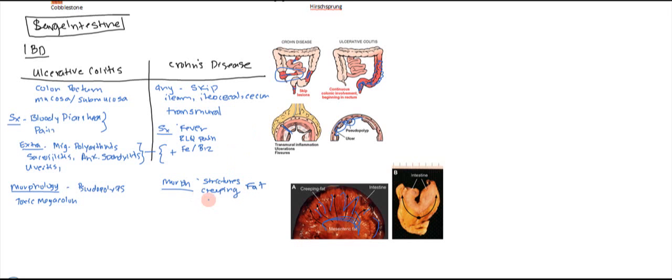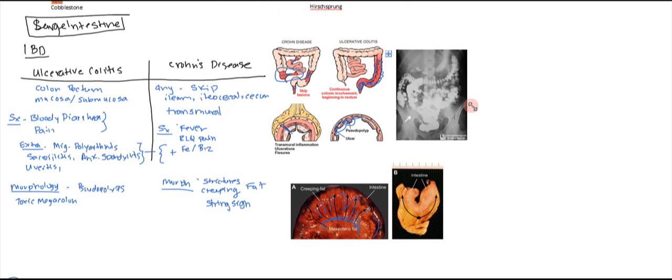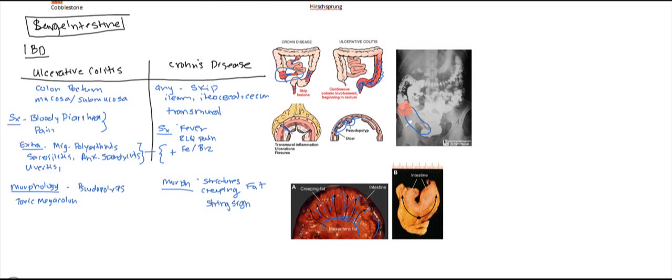The other thing you can get here is called a string sign. This is a radiographical type, and basically that's just seeing the strictures on the radiograph. These strictures right here can kind of start to look like this. If you can see that, it's a string, and that's basically the strictures that are formed because of the problems here.